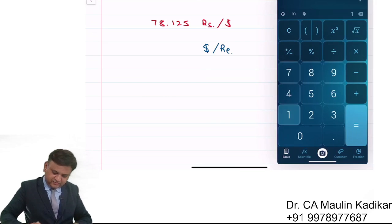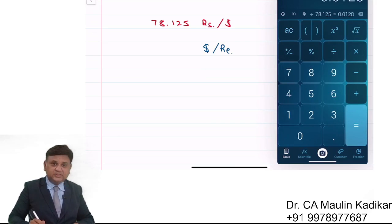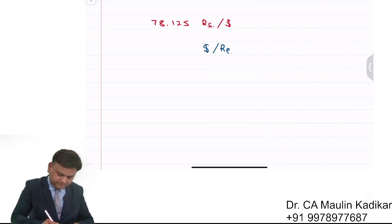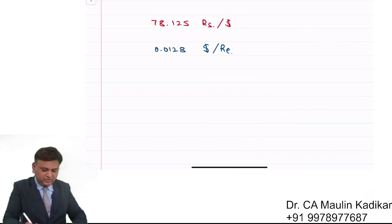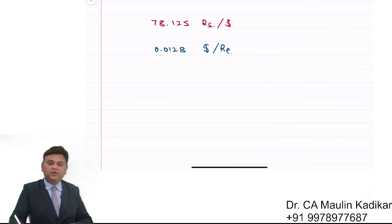1 divided by 78.125, that is 0.0128. This is the exchange rate for dollar per rupee.